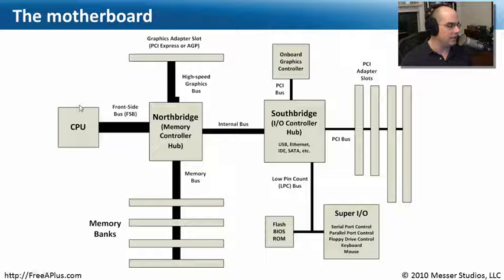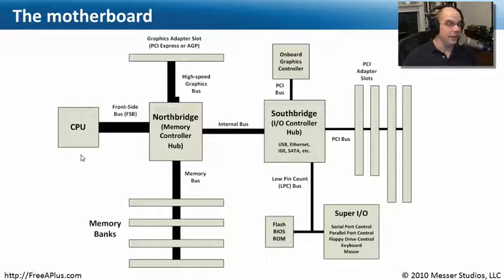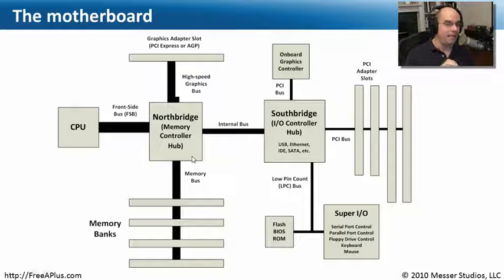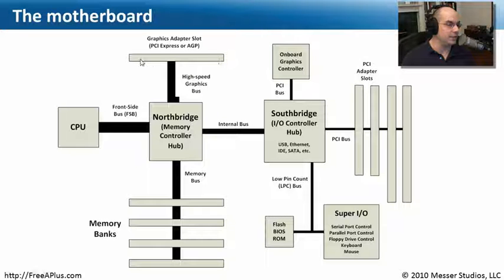On your computer, starting on the left side and working to the right, we have a CPU — we're always going to have a CPU. That CPU connects to something called the Northbridge, one of the major chipsets inside the computer. Many people call it the memory controller hub, which helps us understand a lot more about what it does. This is a very powerful chip that manages the process of the CPU talking to the memory, and in some cases talking across a high-speed graphics bus to a graphics adapter.